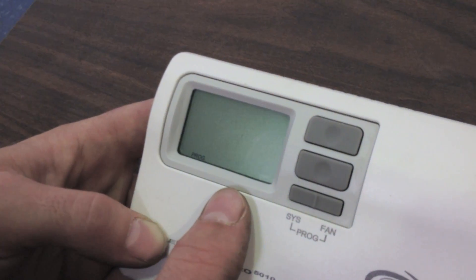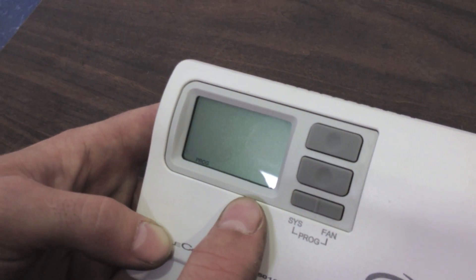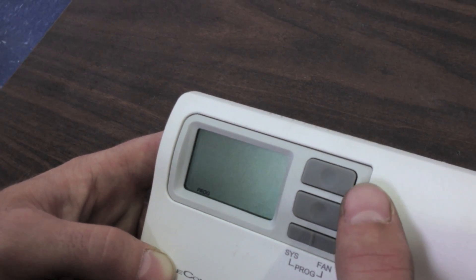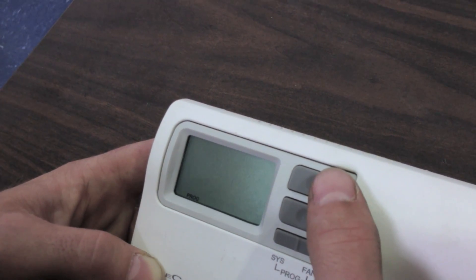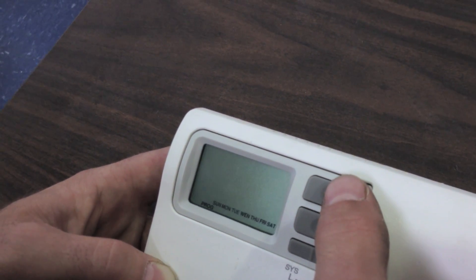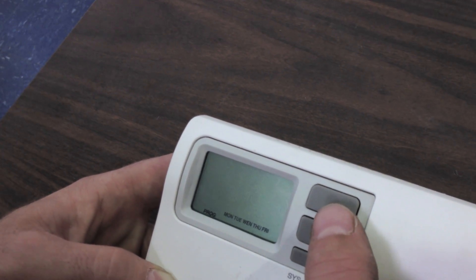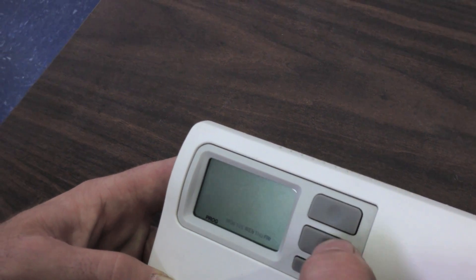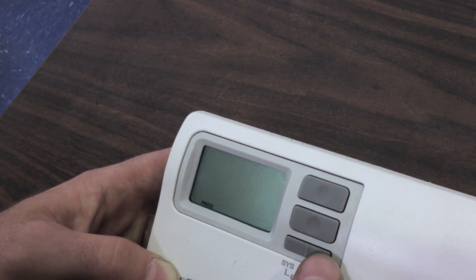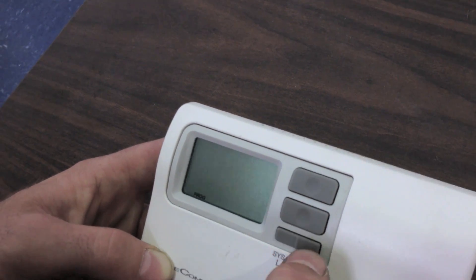And now we have the option of setting a five-day program, a seven-day program, or a five-day with individual weekends. We are going to go with a seven-day program. Right now Sunday through Saturday is displayed. We want to stay on our seven-day schedule. When that is flashing, we're going to push our fan button.